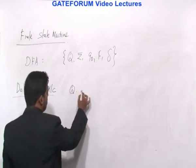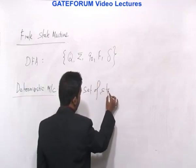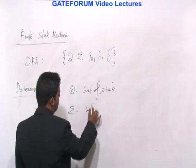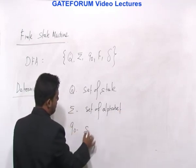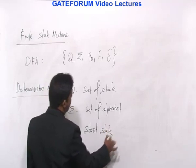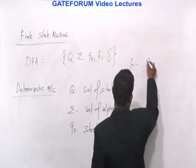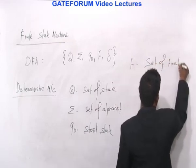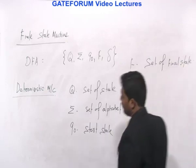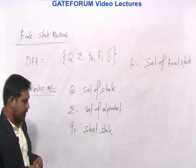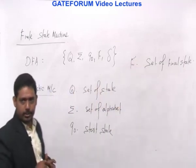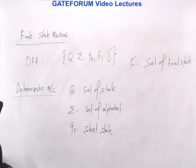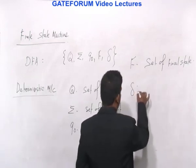Q is a set of states. Sigma is the set of alphabet. Q0 is the start state. F is a set of final states. Now a myth associated with DFA: if there is more than one final state, that does not make the DFA a non-deterministic machine — it is still a deterministic machine. Such beliefs exist and have to be addressed. Finally, delta is the transition function.